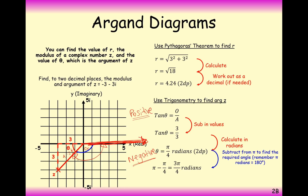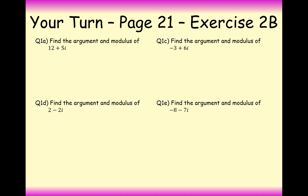In general: if your argument is positive, the complex number is on the top half of the Argand diagram; if your argument is negative, it's on the bottom half. The modulus is always positive because it's just a Pythagoras distance.